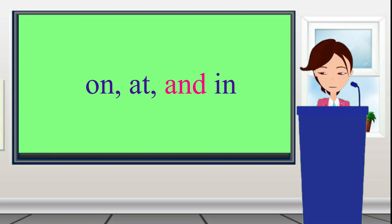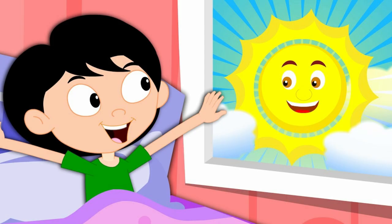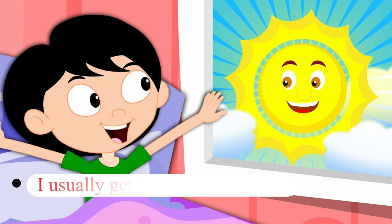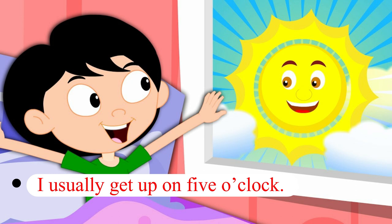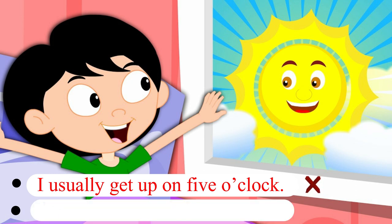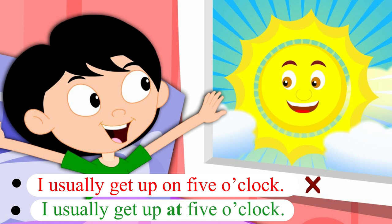AT is used with the exact time — for example, at 4 o'clock, at dawn, at noon, at sunset, at midnight. It would be wrong to say 'I usually get up on 5 o'clock.' We should say: I usually get up at 5 o'clock.